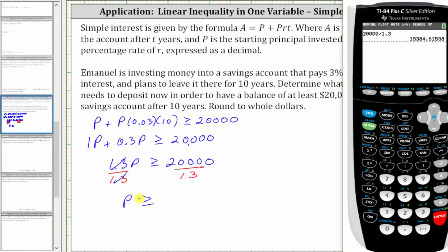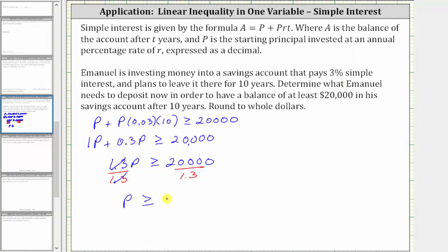So again, in our case, P must be greater than or equal to $15,385, which means Emanuel needs to deposit at least $15,385 to have at least $20,000 after 10 years. I hope you found this helpful.